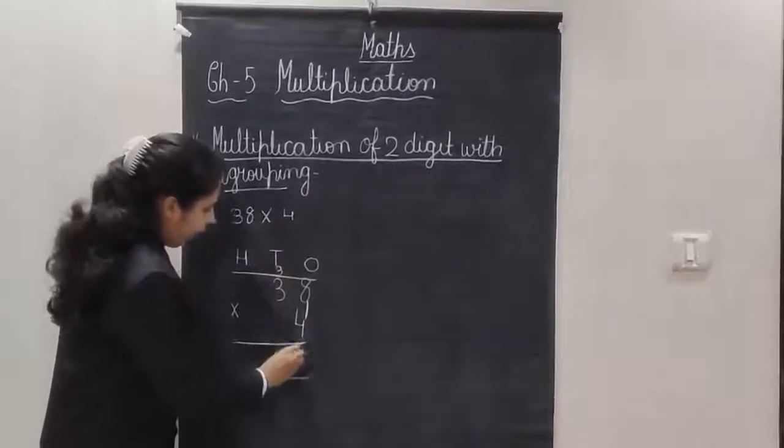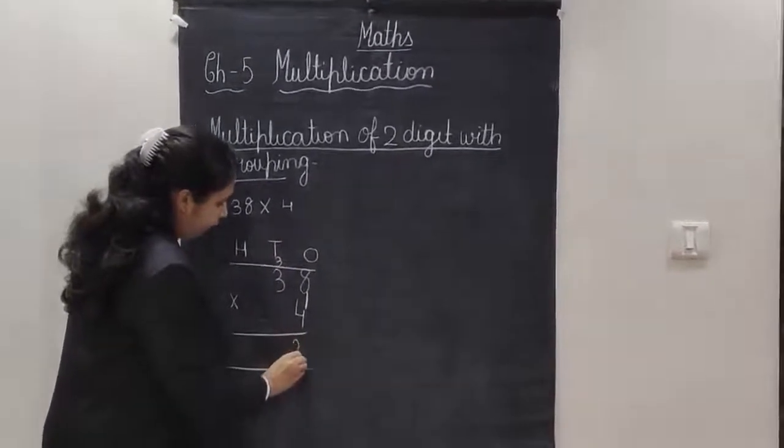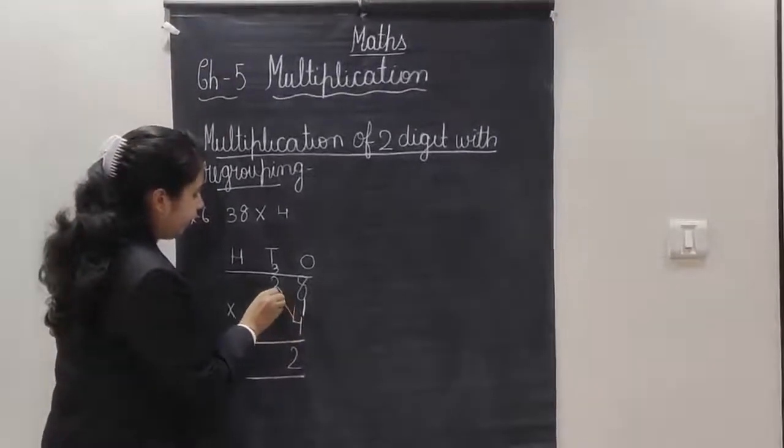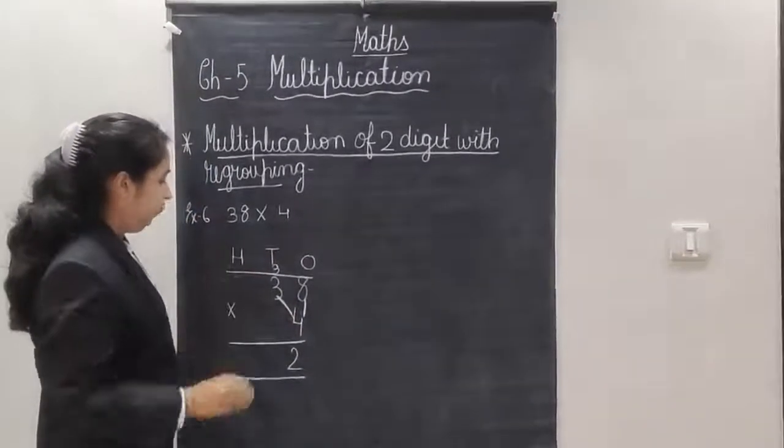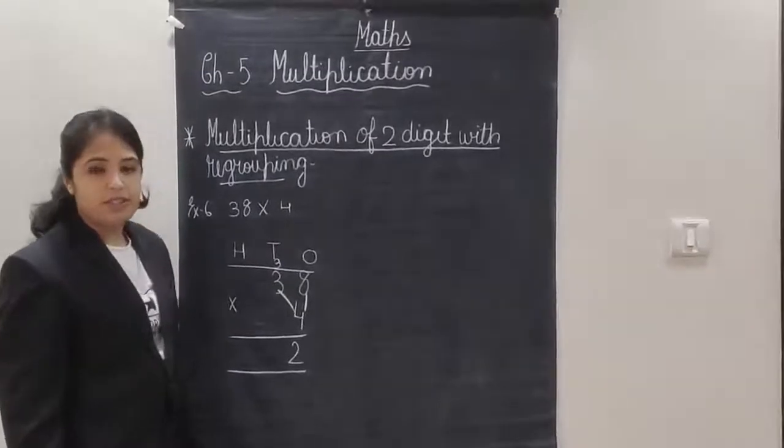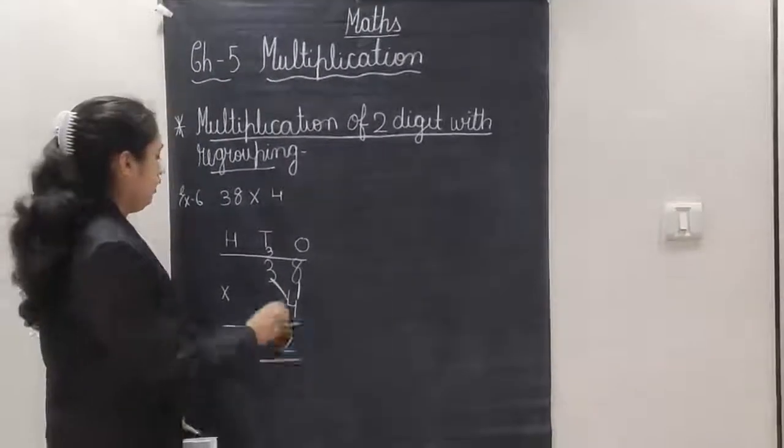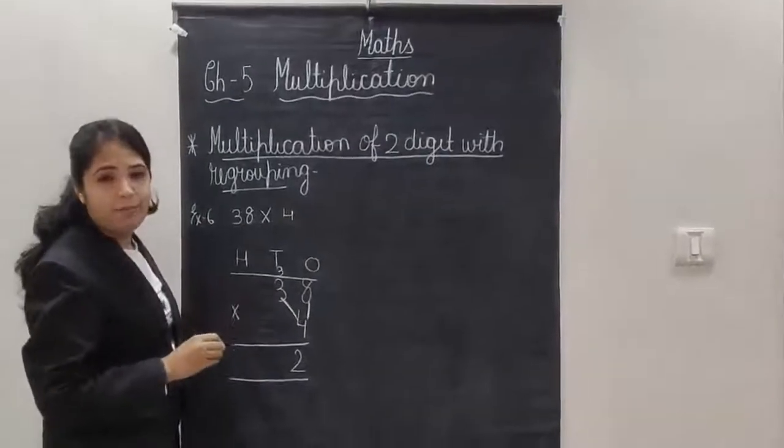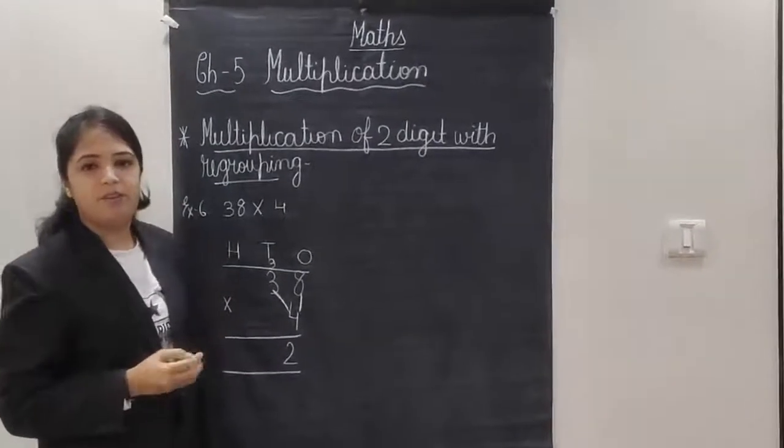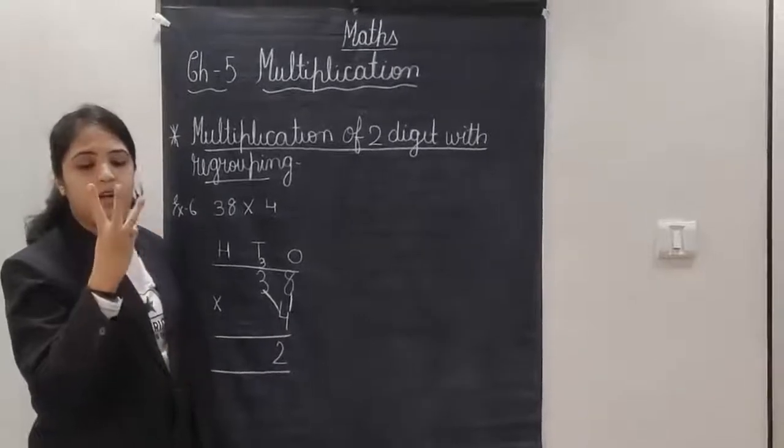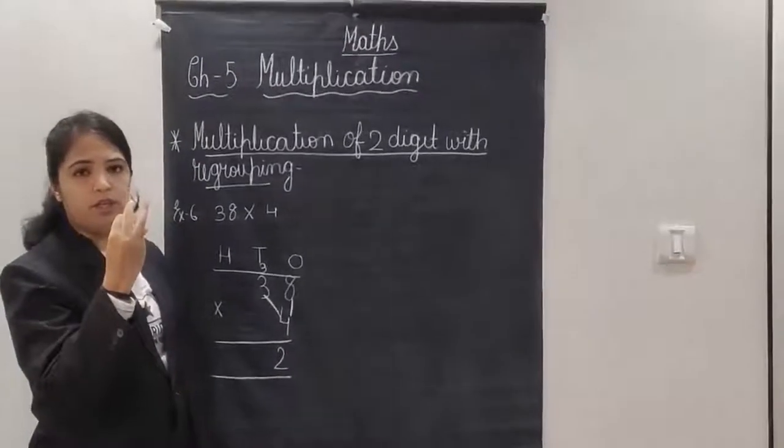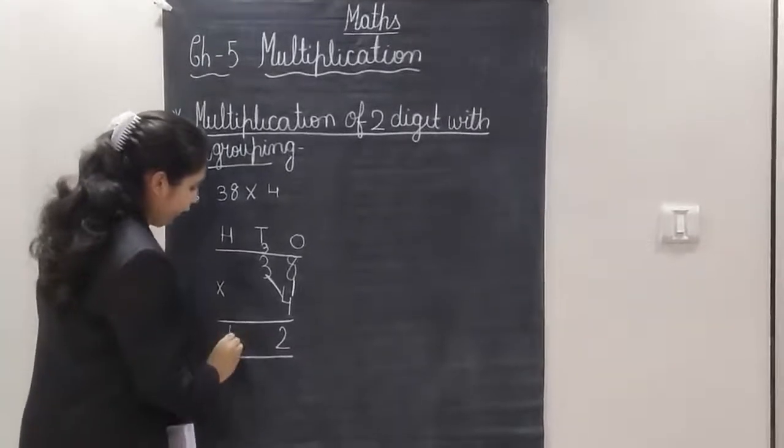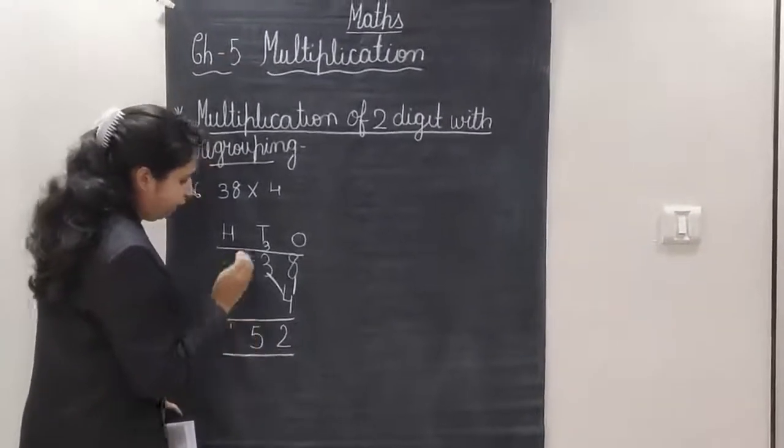So what I will do, as the number is 32, forward number half, backward number half. Now you have to multiply with this number. 4 threes are 12 and this carryover you have to plus. 12 plus 3, 12 in my mind, 3 on my fingers. After 12, 13, 14 and 15. So my answer is 152.